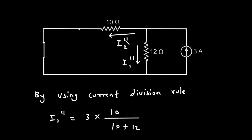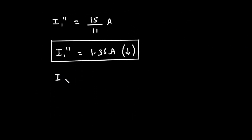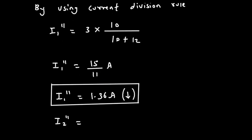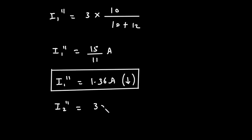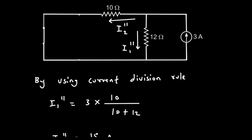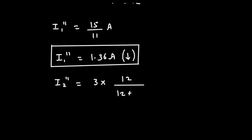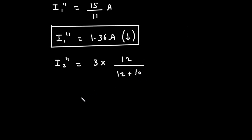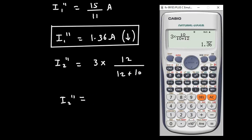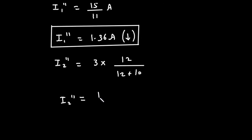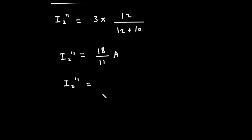Similarly, I2 double prime equals 3 ampere multiplied by the opposite branch resistance of 12Ω divided by (12 + 10), giving 3 × 12 / 22 = 18/11 ampere, approximately 1.63 ampere.